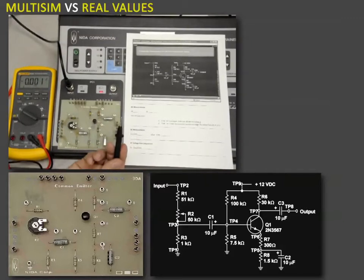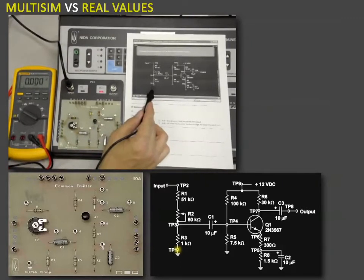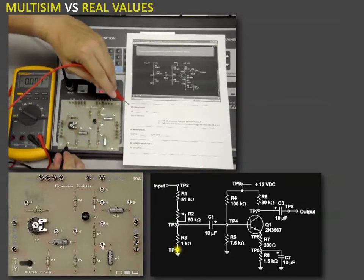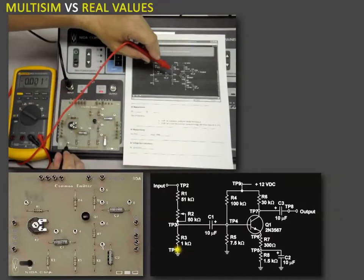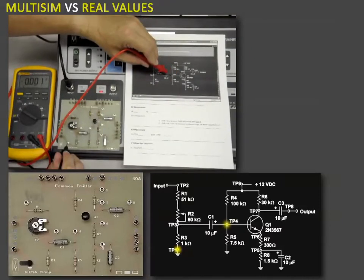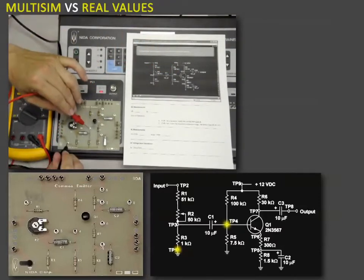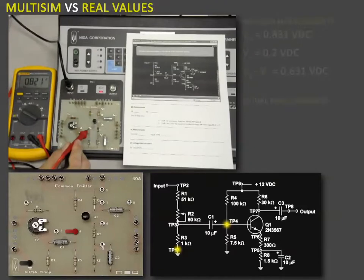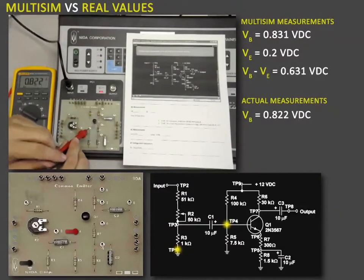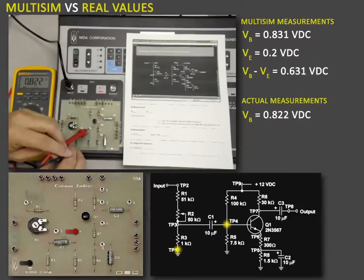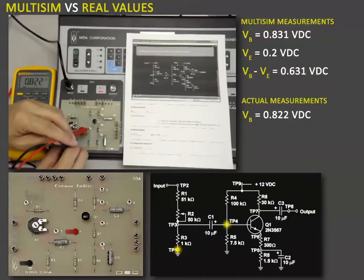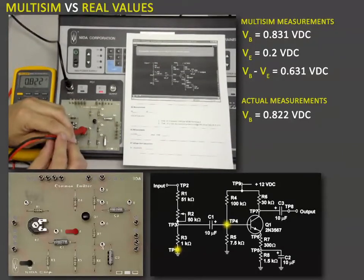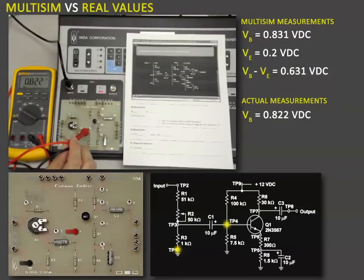So I'll put the black lead on test point one, which is a ground. I'm going to measure voltage of the base, which is right here, test point four. That's point four. And I measure point eight two two. So I have point eight two two volts on the real circuit. And on Multisim, we had point eight three one. So they're very close.